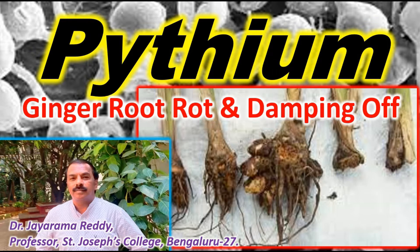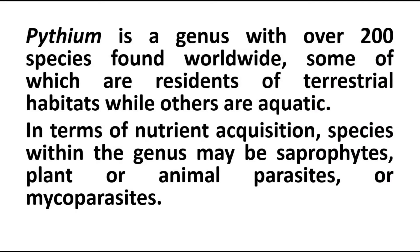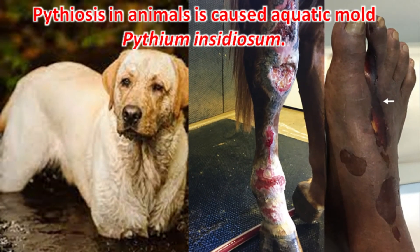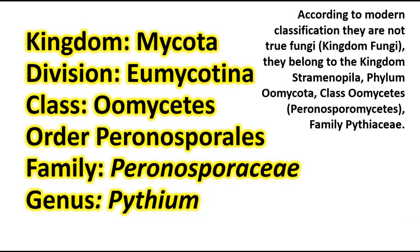Pythium causes a number of diseases in plants like ginger root rot and damping off in many plants. Pythium is a genus with over 200 species found all over the world. It may be terrestrial or aquatic. The fungus is a saprophyte, and sometimes it is also an animal parasite. It is also called a mycoparasite.